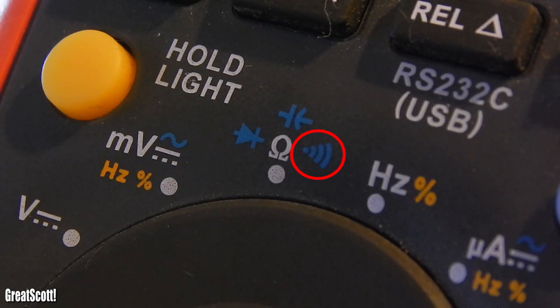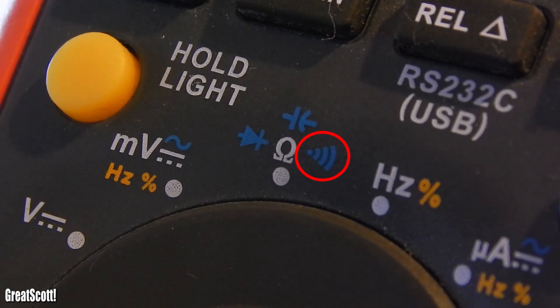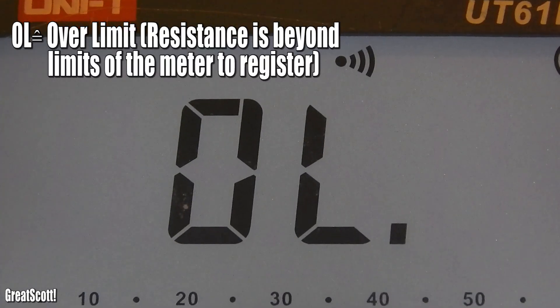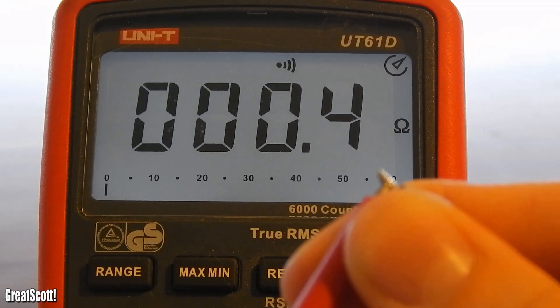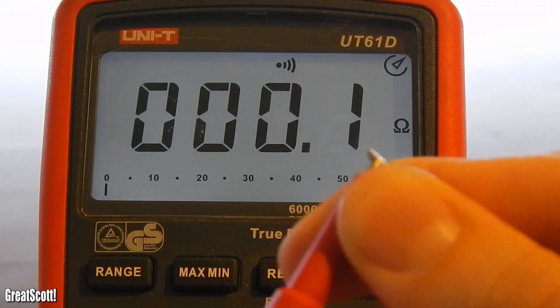Right next to the ohm sign is another awesome feature, the continuity. The meter will beep whenever there is almost zero resistance between the two probes. That means when the probes touch each other, it will beep.